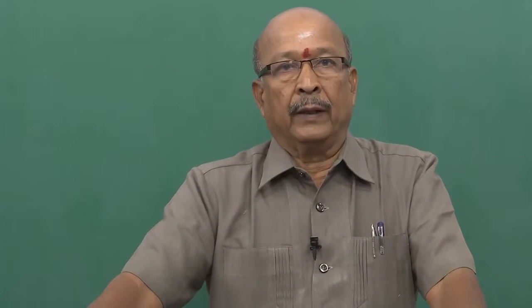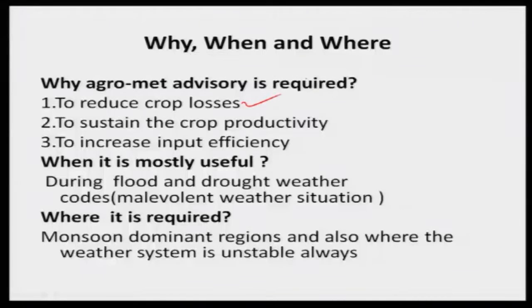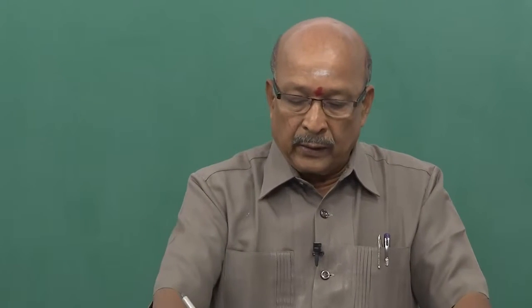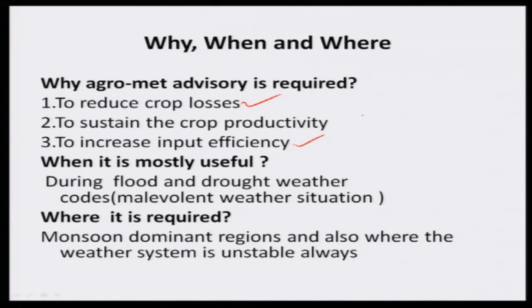Suppose the estimated loss would be 30 percent based on the anticipated weather forecast. If you follow agro advisory, the loss could be reduced by another 20 percent and the minimum loss would be only 10 percent. So 20 percent becomes a saving. To reduce crop losses and sustain crop productivity — when you reduce your losses, you can sustain crop productivity. Finally, to increase input efficiency: when you reduce input and increase efficiency, automatically there is an economical benefit or gain.